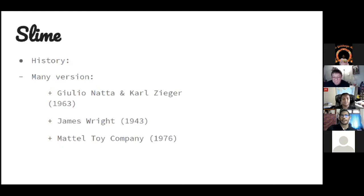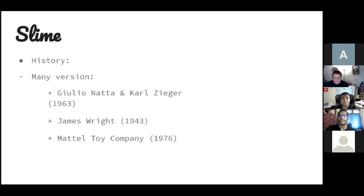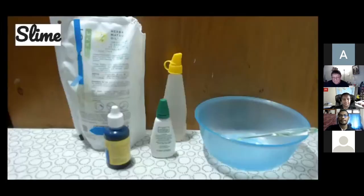The second one is James Wright. This version talks about how he made slime accidentally. He was trying to make a synthesis polymer to help America in fighting World War II, but it ended up being slime. The third version of the history is Mattel Toy Company. It is believed by many people that the first slime was made by Mattel Toy Company in 1976.